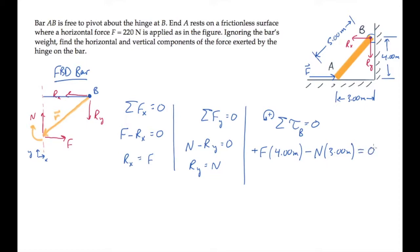So we can solve for the normal force. It equals 4 thirds times the horizontal force F, which is 220 newtons. So the normal force equals 293 newtons. This means that Ry, the vertical component of that hinge force, is also 293 newtons. And we know from before that Rx, the horizontal component, equals F, that's 220 newtons.